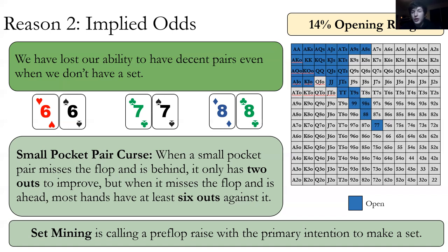Say we called and our opponent whiffs the flop — they have ace-king and miss. We're currently ahead with our pocket eights, but we only have two outs to make three of a kind. If they had paired their ace, we only have two outs to improve to the best hand. On the contrary, if ace-king doesn't pair and we have our eights, they have three aces and three kings as outs. Essentially when we're behind it's very unlikely we'll improve; when we're ahead, about a quarter of the time our opponent will improve to the best hand. It's also very uncomfortable — say we have pocket eights and the board comes queen-nine-six, our opponent starts betting, they've missed the flop with ace-king but that doesn't matter to us since we have third pair, and as turn and river come our pair becomes worse and worse.